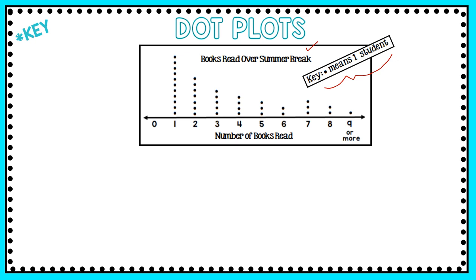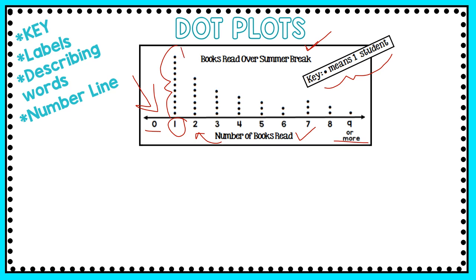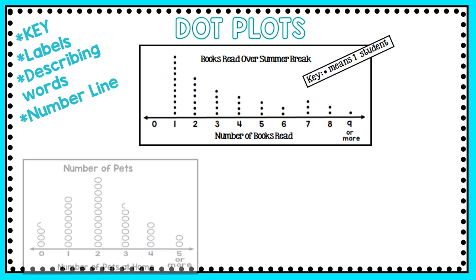The other parts of the graph you really need to pay attention to are the labels. 'Books read over summer break' is my title, and 'number of books read' at the bottom is a label telling me those numbers represent the number of books read. Dot plots have number lines — that's a big part of reading a dot plot. Here, the number line starts at zero and goes to nine or more. If I'm looking to see how many students read one book over the summer, I count the dots in that column, and I can see that eleven students read one book. If there's no key on a dot plot, you're safe assuming every dot means one.